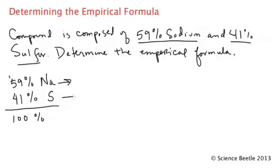Since I know this is the case, I can take this percentage and just assume that the percent is really grams. So I'm going to rewrite that as 59 grams of sodium and 41 grams of sulfur.